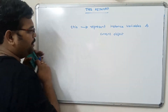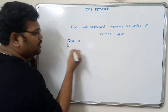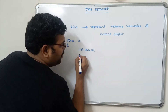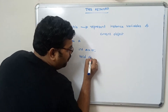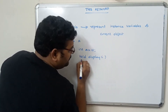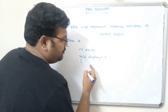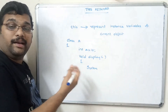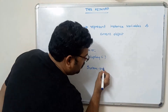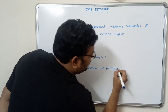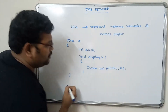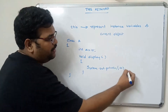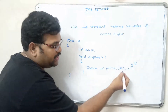Let us take an example. We have a class with an instance variable 'a' equal to 10, and we write one method 'void display'. Inside the method, we want to display that variable directly — we can access it, no need to create any object. So we write System.out.println(a), and this will display 10.